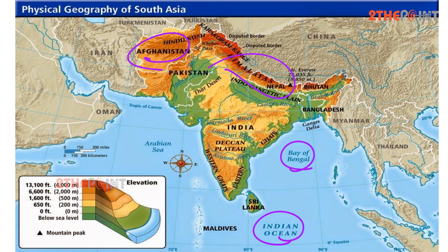The western boundary is a desert region where Pakistan shares a border with Iran. The landmass of South Asia was formed by the Indian plate colliding with the Eurasian plate, and this action started about 70 million years ago. It gave rise to the highest mountain ranges in the world.